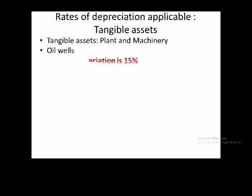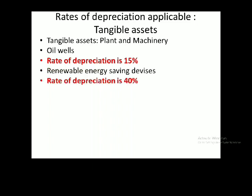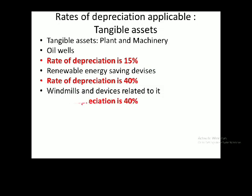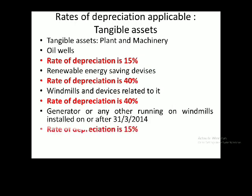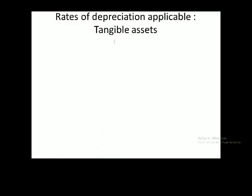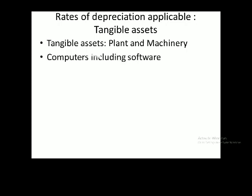Oil wells — the rate of depreciation is 15%. Renewable energy saving devices — the rate of depreciation is 40%. Wind mills and devices related to wind mills — the rate of depreciation is 40%. Generators or any other machinery running on wind mills installed on or after 31st March 2014 — the rate of depreciation is 15%. Computers, including both hardware component and software component — 40% will be the depreciation.